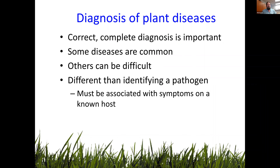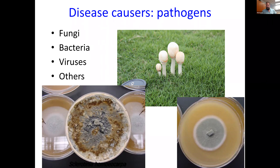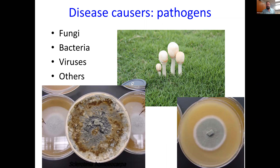A diagnosis is an association of a pathogen with a known susceptible host within an environment favorable for disease to occur. Most of the turf diseases we deal with — with the exception of the first one I'll discuss today — are caused by fungi. That applies to ornamental plants as well. Fungi are very common plant pathogens. Bacteria are less so; phytoplasmas fit into that bacterial category and are a major issue for palms. Viruses also cause disease. We have the most management options available for fungal diseases of plants.